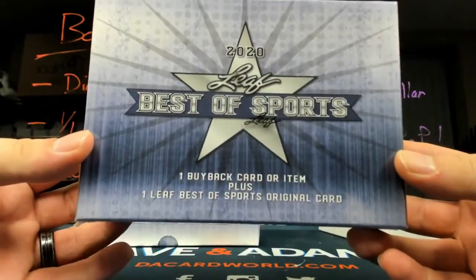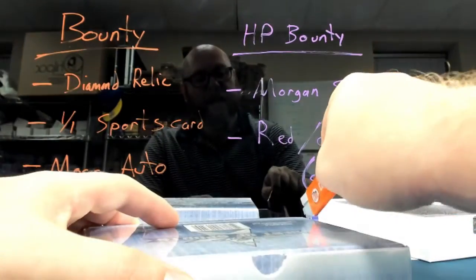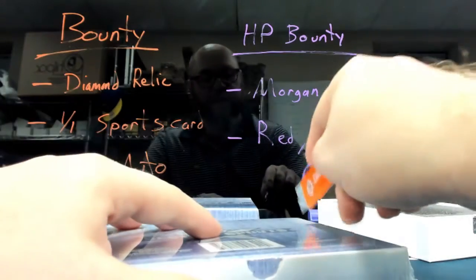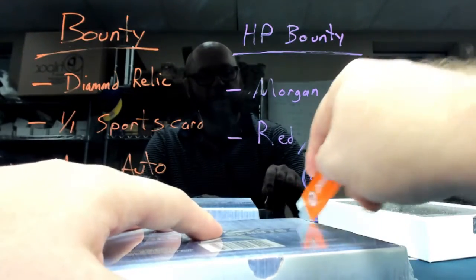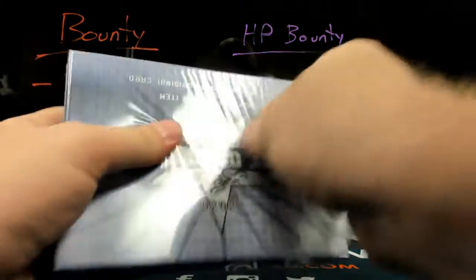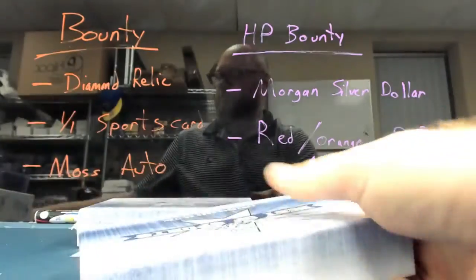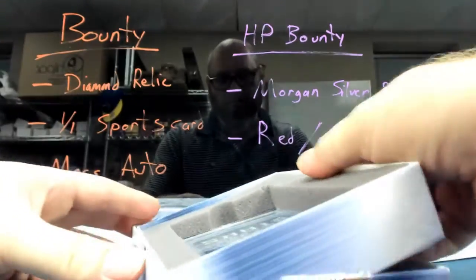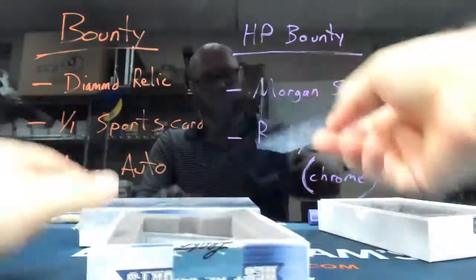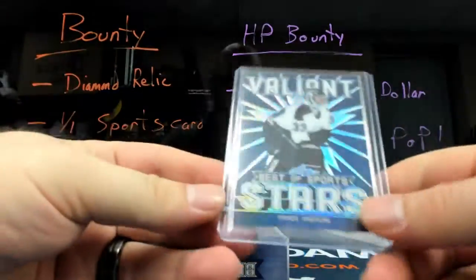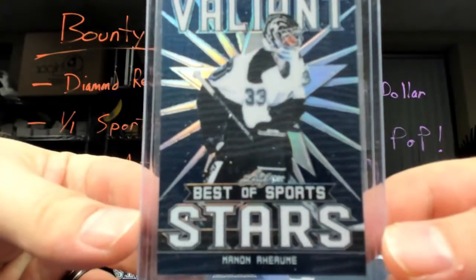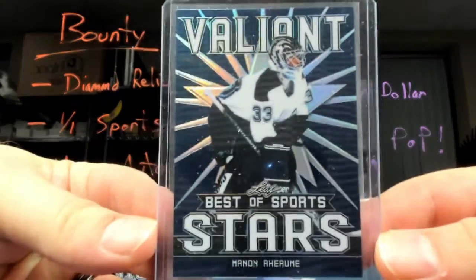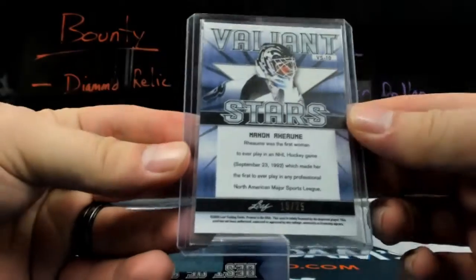2020 Leaf Best of Sports. I have pulled some absolute stunners out of here, that's no lie. How about the first female goaltender, Manon Roumet? Out of 25.